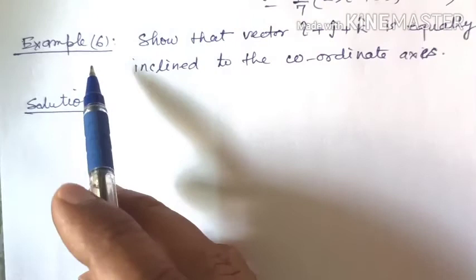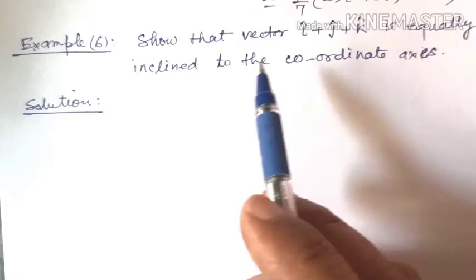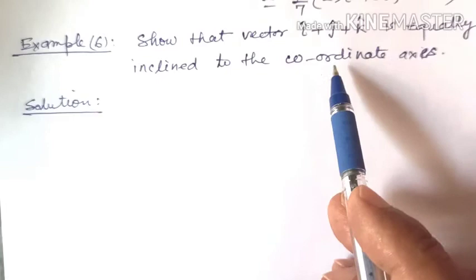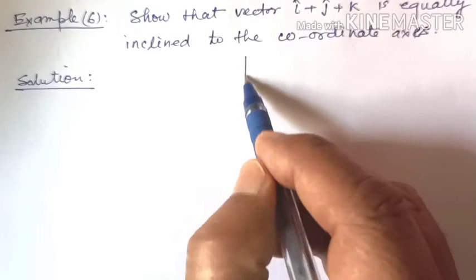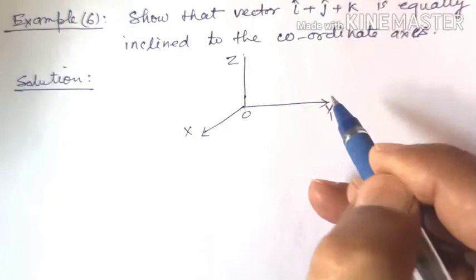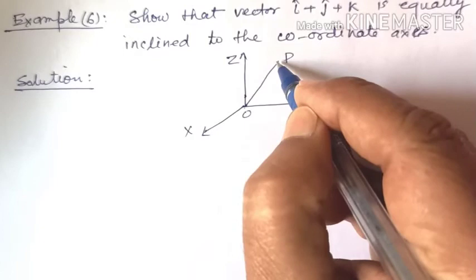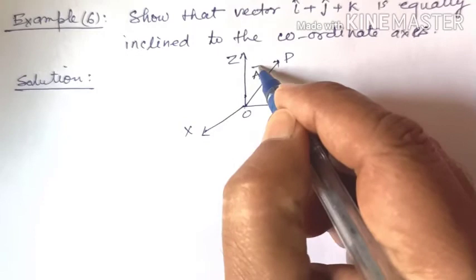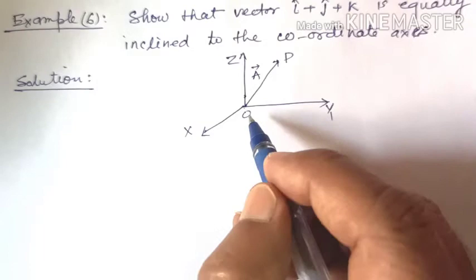Next, example 6: show that vector i plus j plus k is equally inclined to the coordinate axes. This vector makes equal angles with the x-axis, y-axis, and z-axis — that is what we need to prove. If angle alpha is with x-axis, beta with y-axis, and gamma with z-axis, then we need to show alpha equals beta equals gamma.